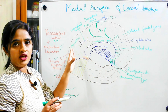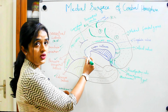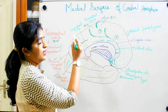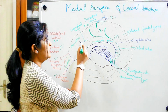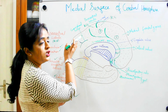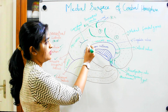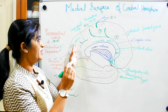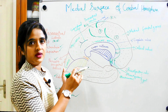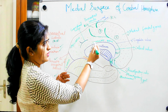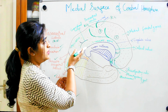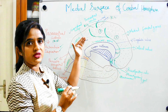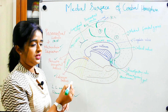Now coming to the posterior aspect — this region is the splenium of the corpus callosum. Just above it and running parallel you will get the suprasplenial sulcus. This sulcus divides the posterior aspect into two gyri. One we have already mentioned — the cingulate gyrus — and above that is the region called precuneus. The cingulate gyrus and the precuneus are separated by the suprasplenial sulcus, which lies just above the splenium of the corpus callosum.